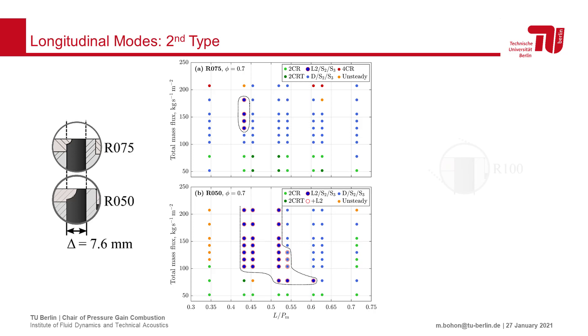First and foremost, it only occurs under conditions with a greater outlet restriction. And when it does occur, it is confined to a region of length over perimeter of around 0.45 to 0.55, and for regions of higher mass flow rate.